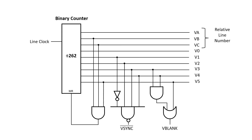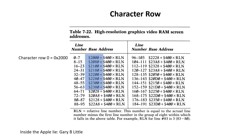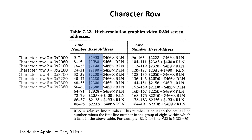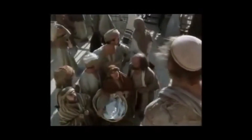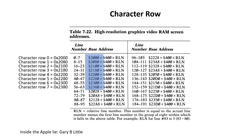VA, VB, and VC form the relative line number, and these go to video address bits 10 through 12. I'll call a group of eight scanlines a character row. There are 24 character rows, each with eight scanlines. Character row 0 maps to 2000 hex, character row 1 maps to 2080, character row 2 maps to 2100, and character row 3 maps to 2180. So for at least the first eight character rows, we can just see that it's counting up by 80 per character row.